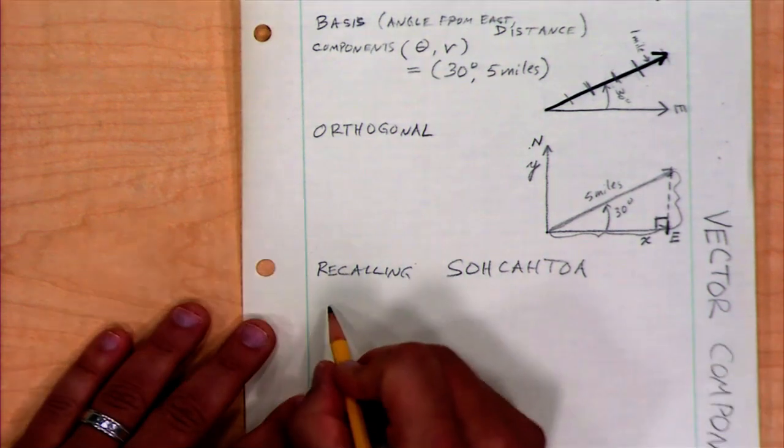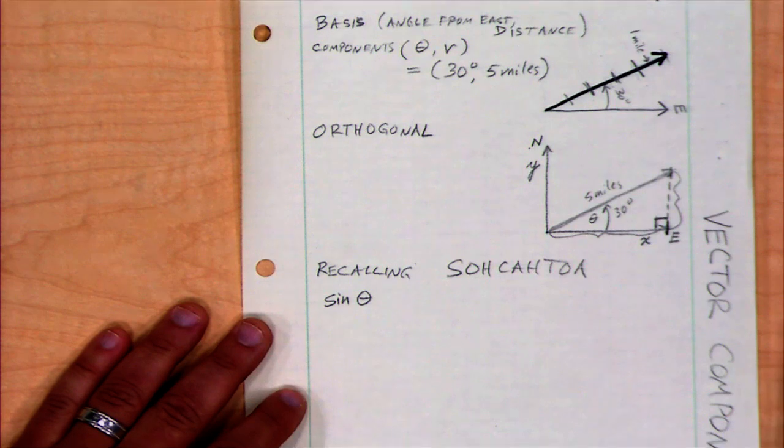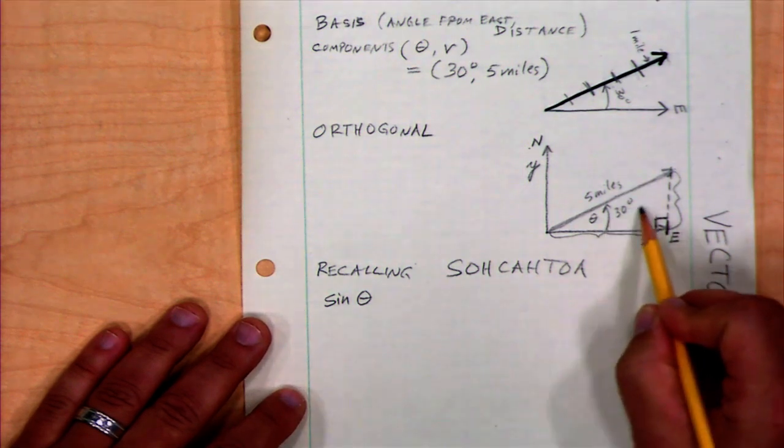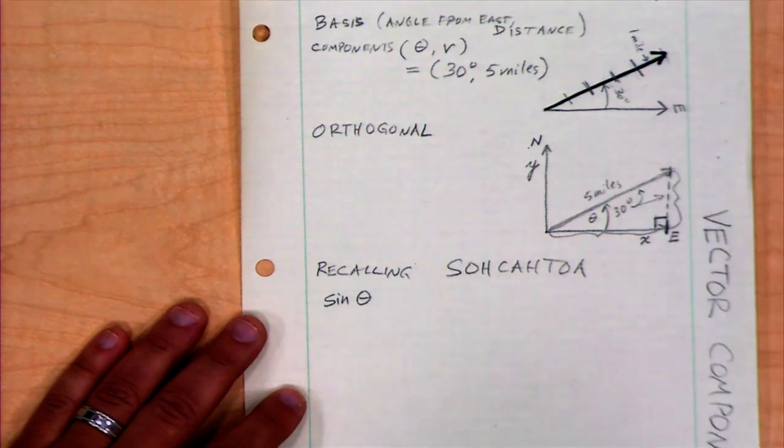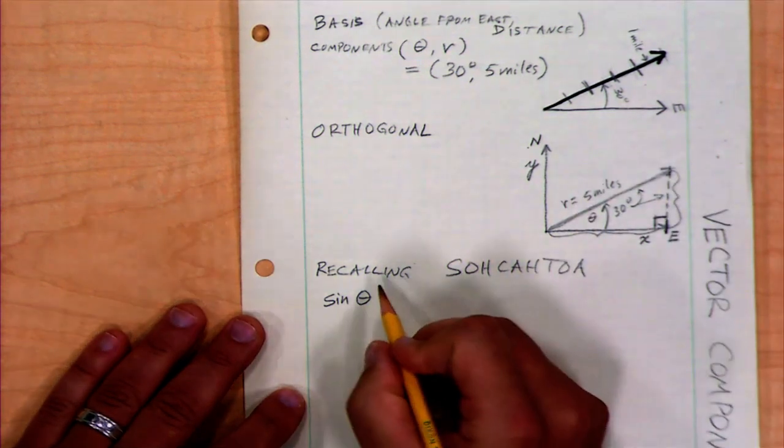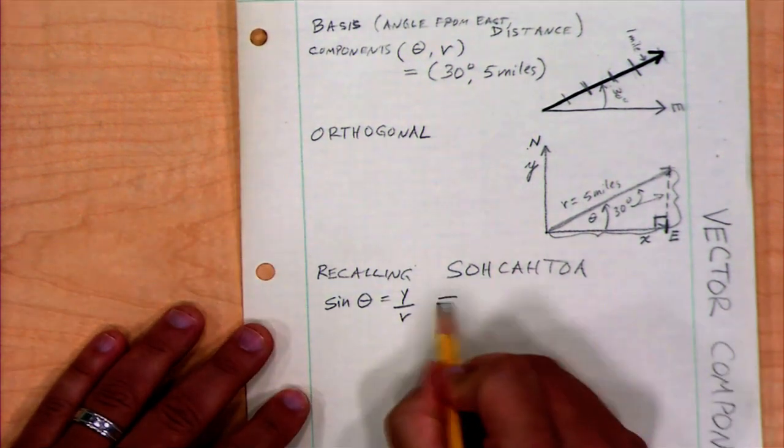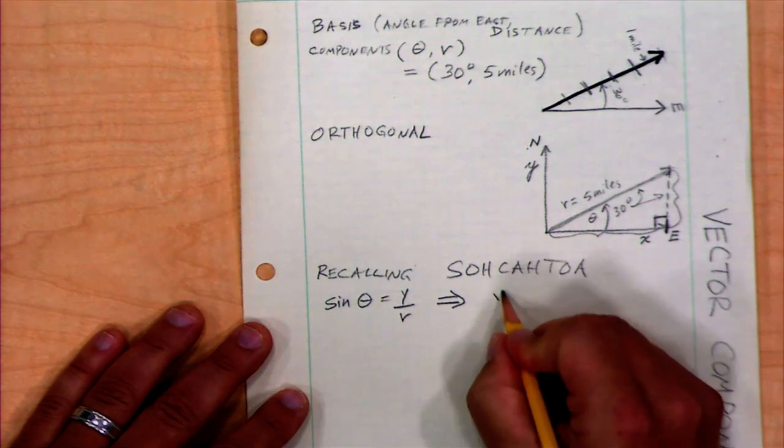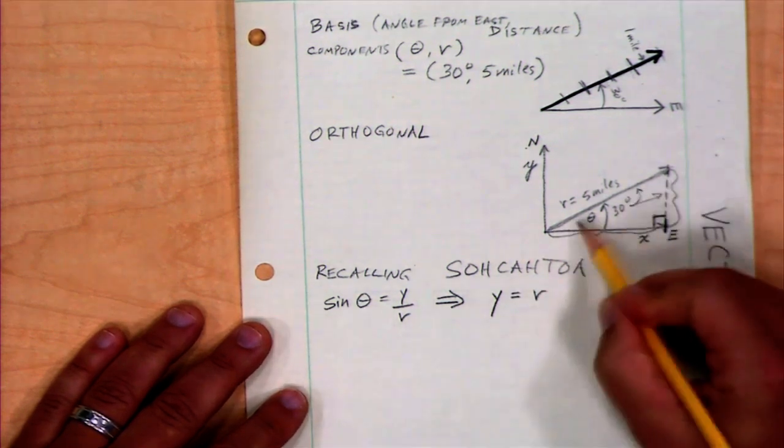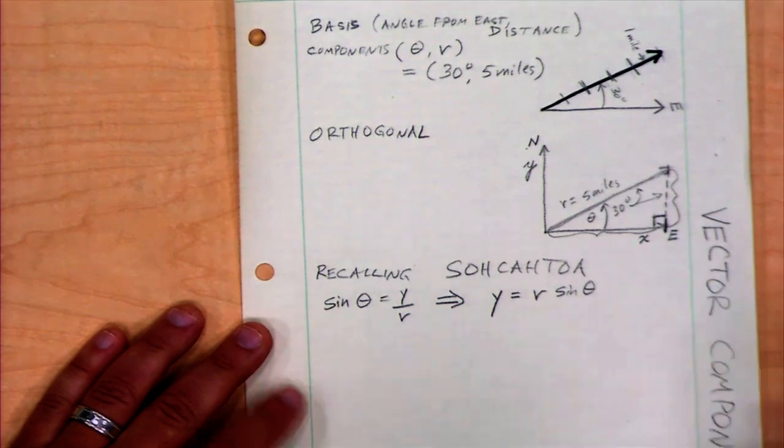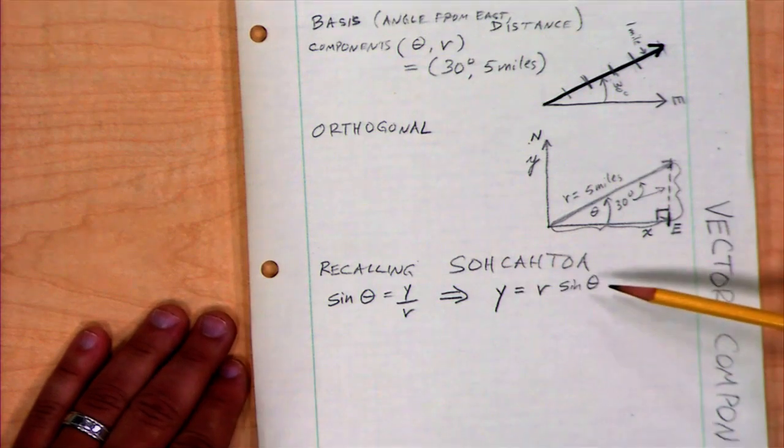If I use that information, I know that the sine of my angle, here's my angle theta. The sine of the angle has to be related to the opposite side over the hypotenuse, which we were calling r. So, my sine of my angle is equal to y over r. If I do a little math, multiply both sides by r, I can also say that my component y is equal to r, that's my hypotenuse, times the sine of the angle. Now, I have a relationship that tells me how to get y if I have r and theta, which I do.